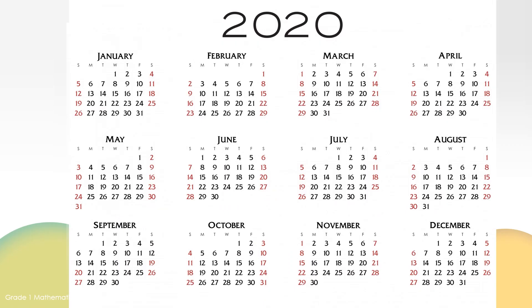We have days, weeks, months, and we have years. There are 12 months in a year. Let's use our communication skills and name them together.